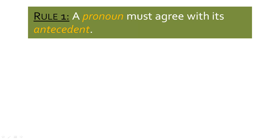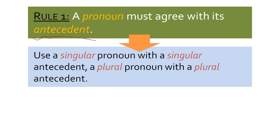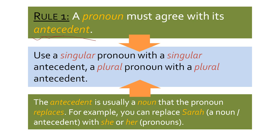Rule number one: a pronoun must agree with its antecedent. Don't be afraid — antecedent. 'Ante,' a prefix meaning 'before.' All an antecedent is is the subject that our pronoun is going to later replace. The subject comes before it in the sentence. We're going to use a singular pronoun with a singular antecedent and a plural pronoun with a plural antecedent. The antecedent is usually a noun that the pronoun replaces — for example, you could replace Sarah with 'she' or 'her' later in the sentence to avoid repetition. Sarah is our antecedent, coming before.